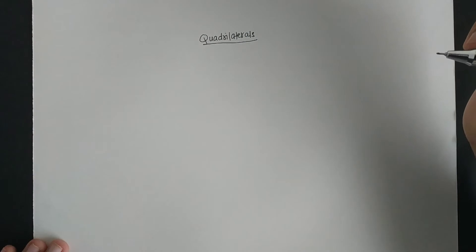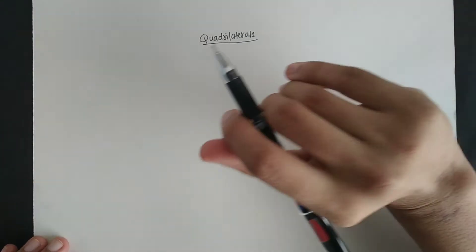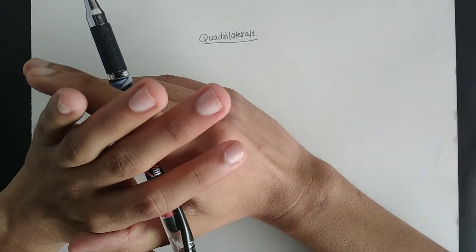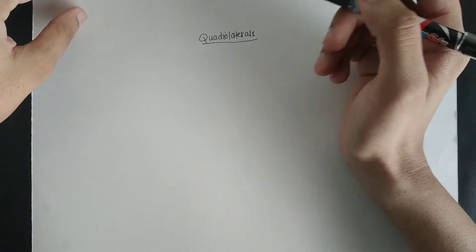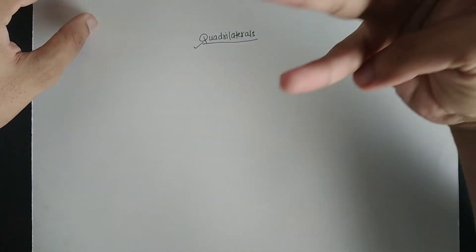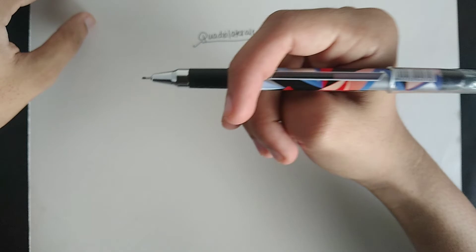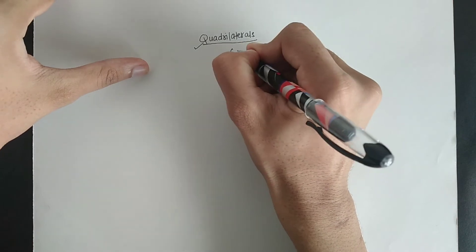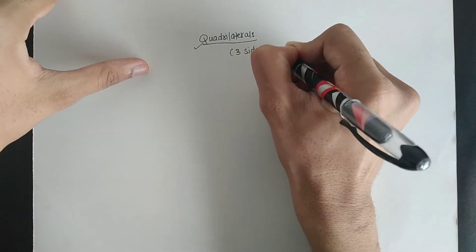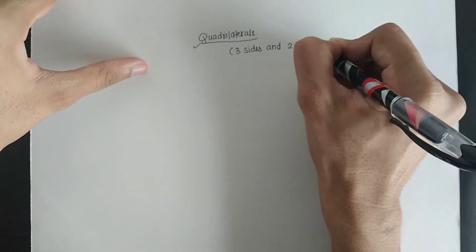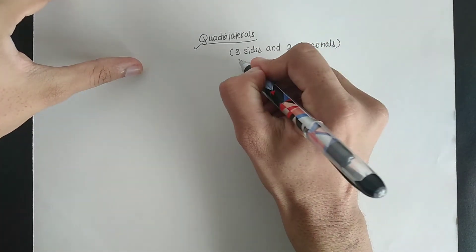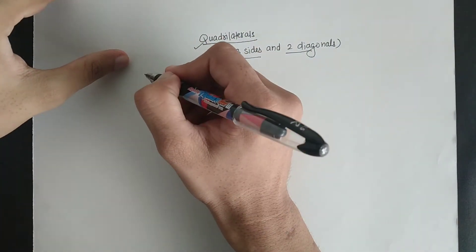Hello everyone, welcome to our new lecture. In this lecture we are going to see the construction of a quadrilateral if the dimension of three sides and two diagonals are given to us. In the previous lecture we have seen the construction of a quadrilateral where four sides and one diagonal were given. But here we will have the length of three sides and two diagonals. Now let us see how we can construct it, so I will write down the question.